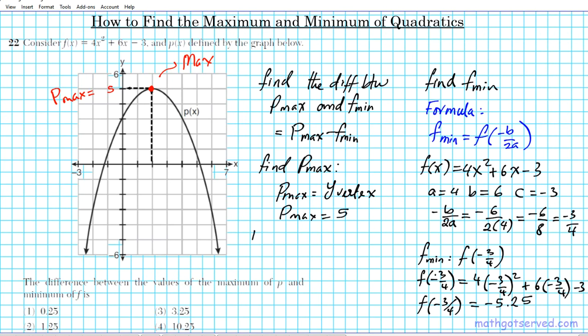So the difference between the maximum of P and the minimum of F is 5, P max, minus F min, which is negative 5.25. Since the signs are the same, you just add, so it's going to become 10.25. The answer to question number 22 is option number 4. So this is how you find the extrema of quadratics graphically or using your calculator.